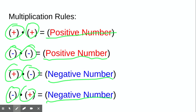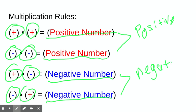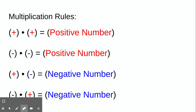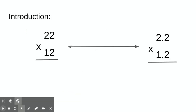Basically, if the signs are the same — multiplying two positives or two negatives — your answer will always be positive. If you multiply two numbers where the signs are different, one positive and one negative, then our answer will be negative. Multiplying decimals is really not much different than multiplying numbers without decimals, which will make more sense as we work through examples.